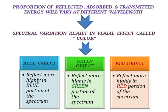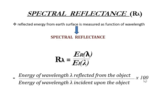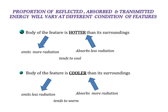The proportions of reflected, absorbed, and transmitted energy vary in different ways — spectral variations result in a visual effect called color. Blue, green, and red are the primary colors: blue reflects more highly in the blue portion of the spectrum, green in the green portion, and red in the red portion. Combinations of these three primary colors give various secondary colors, but combining secondary colors cannot produce a primary color. The spectral reflectance is calculated as the energy of a given wavelength reflected from the object divided by the energy of that wavelength incident upon the object.